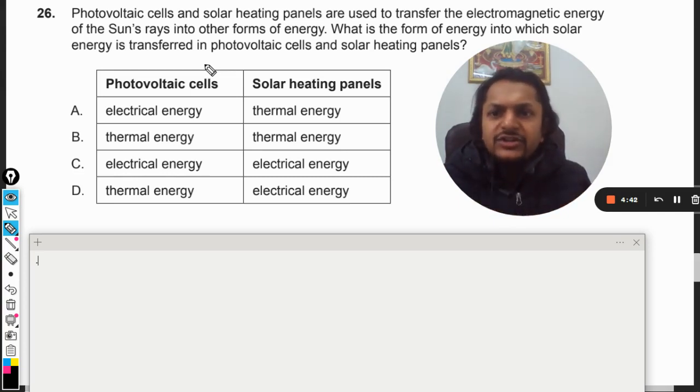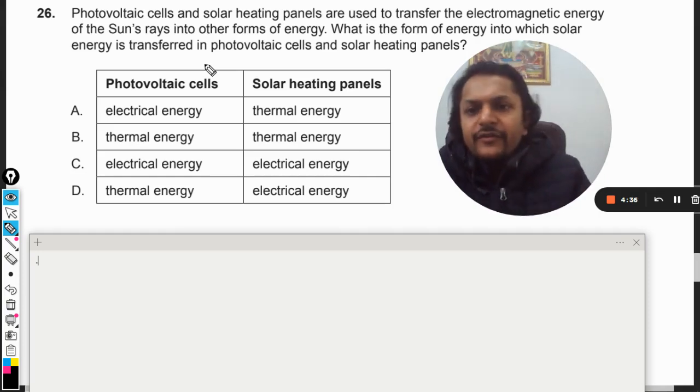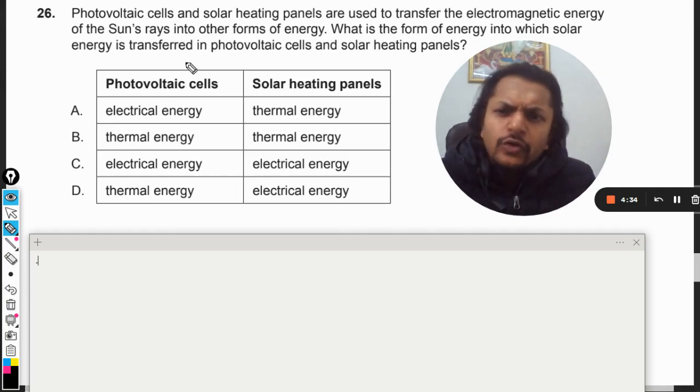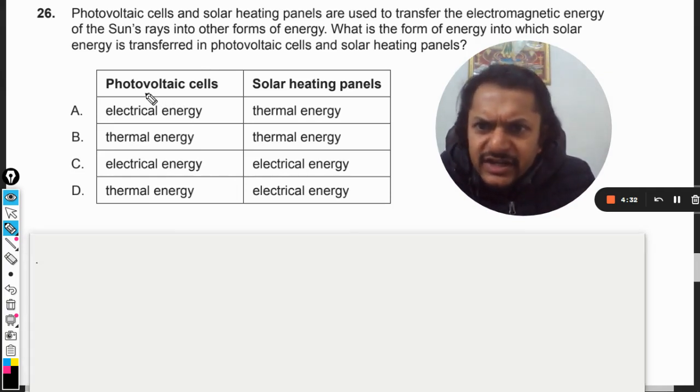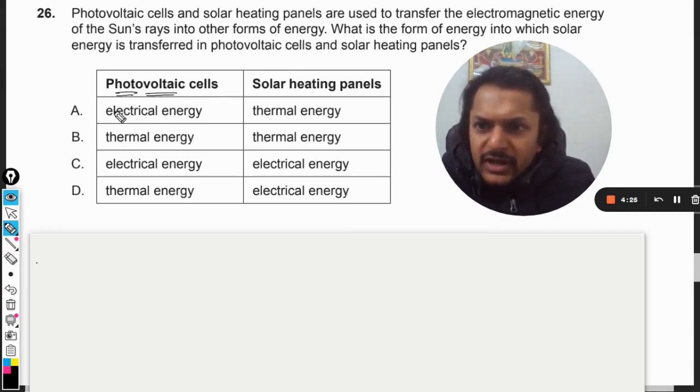Okay fine. So the photovoltaic cell, as the name suggests, is generating the voltage with the help of photons, that is the light. So it will be electrical energy, no doubt about it.